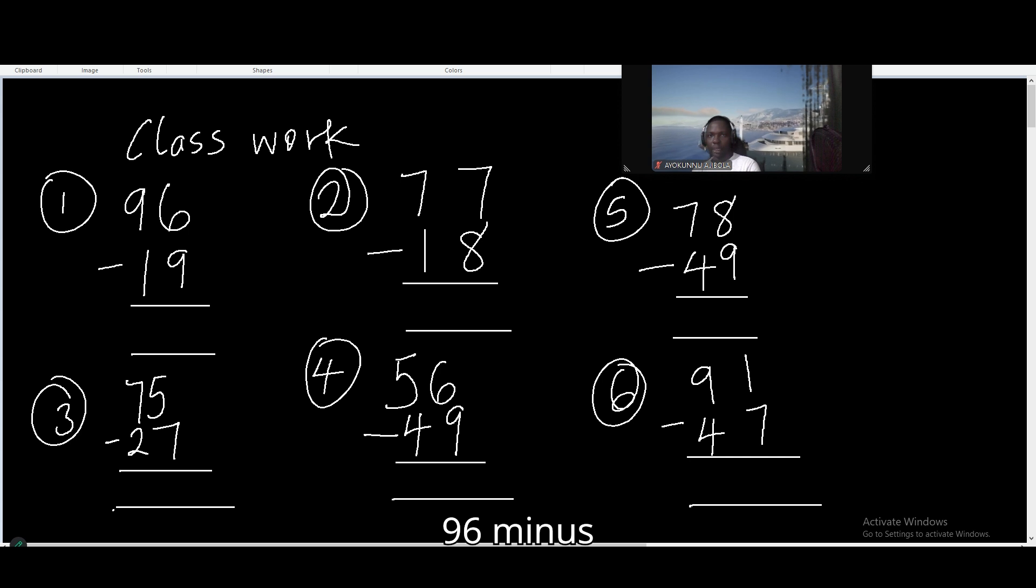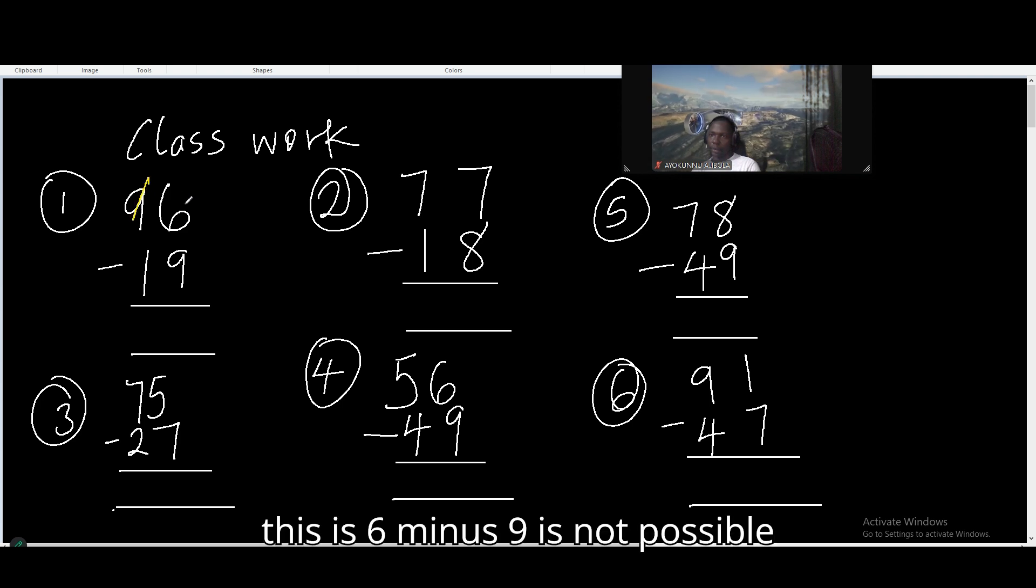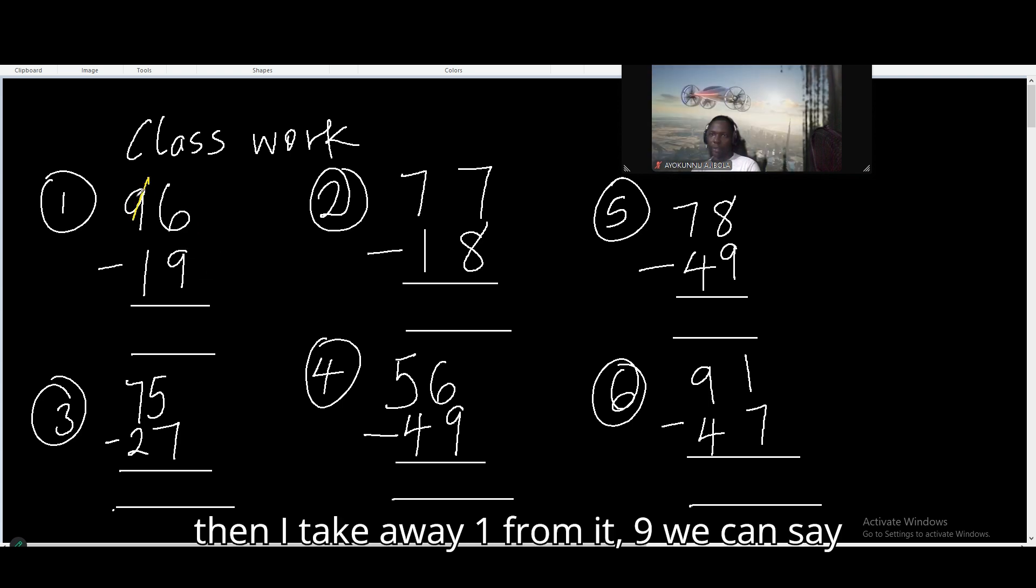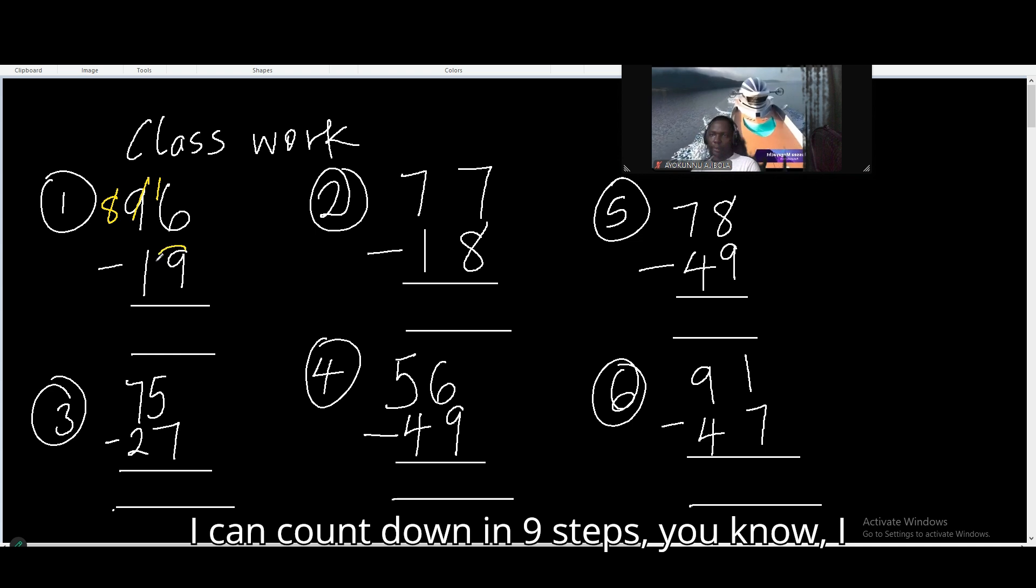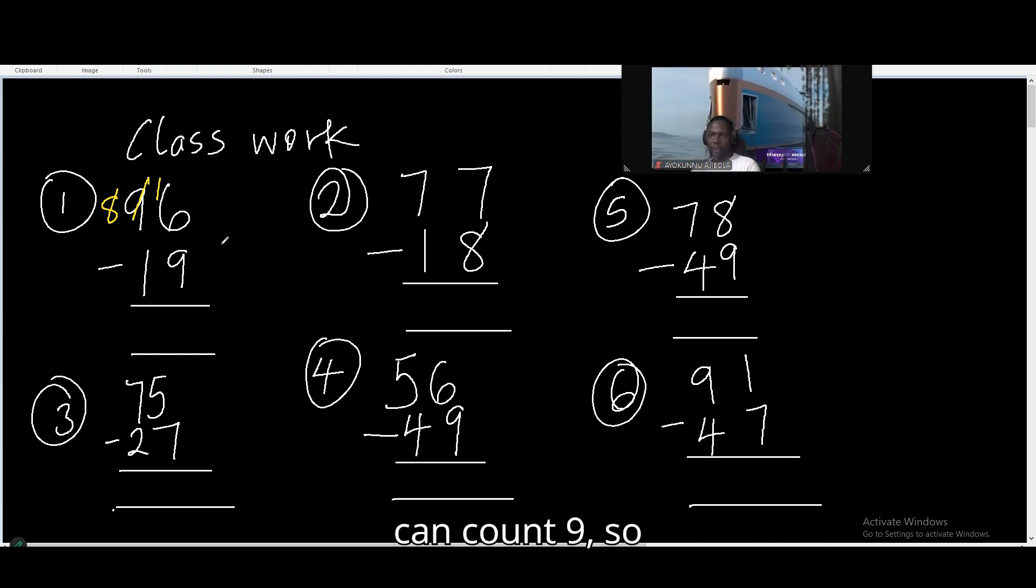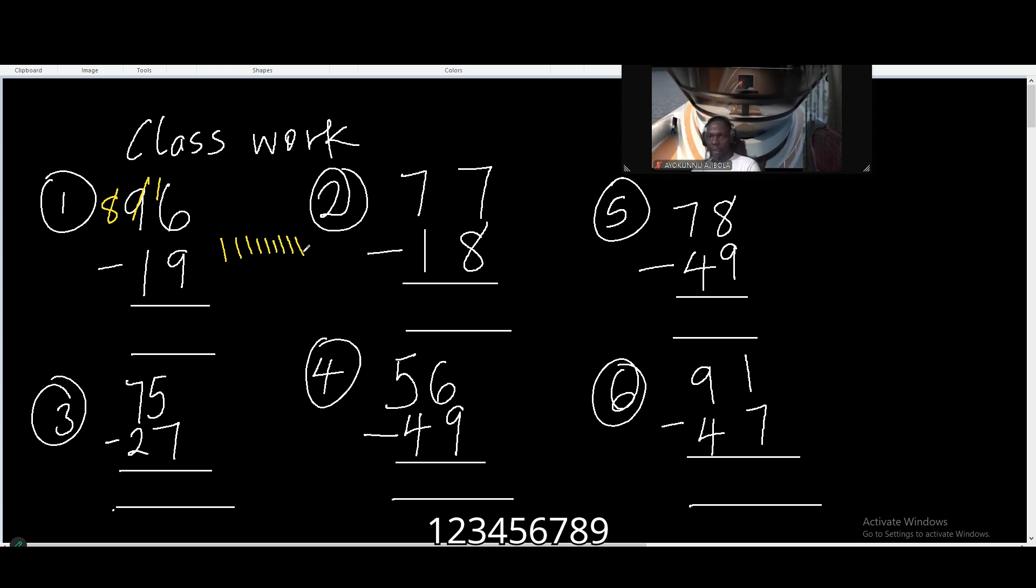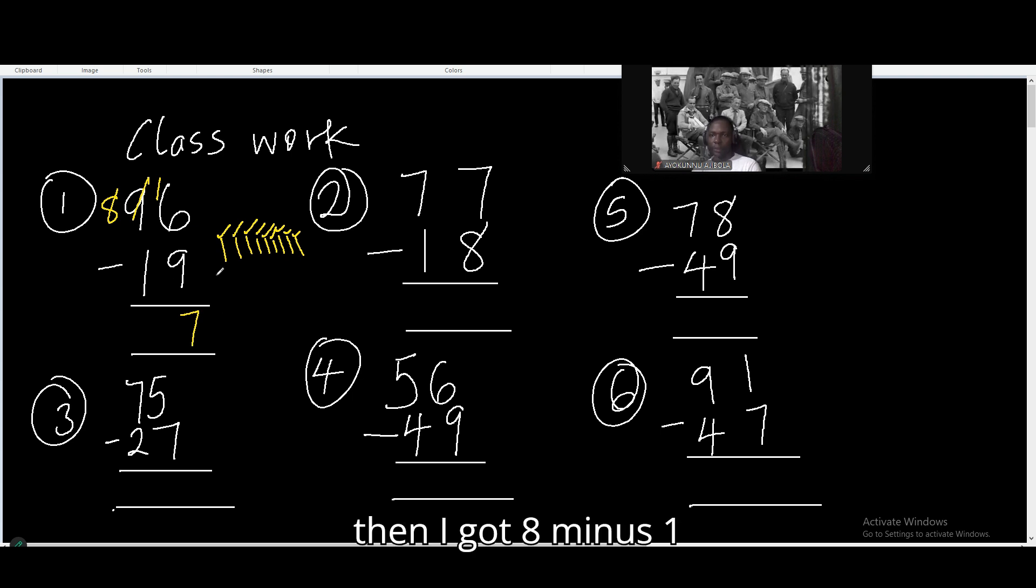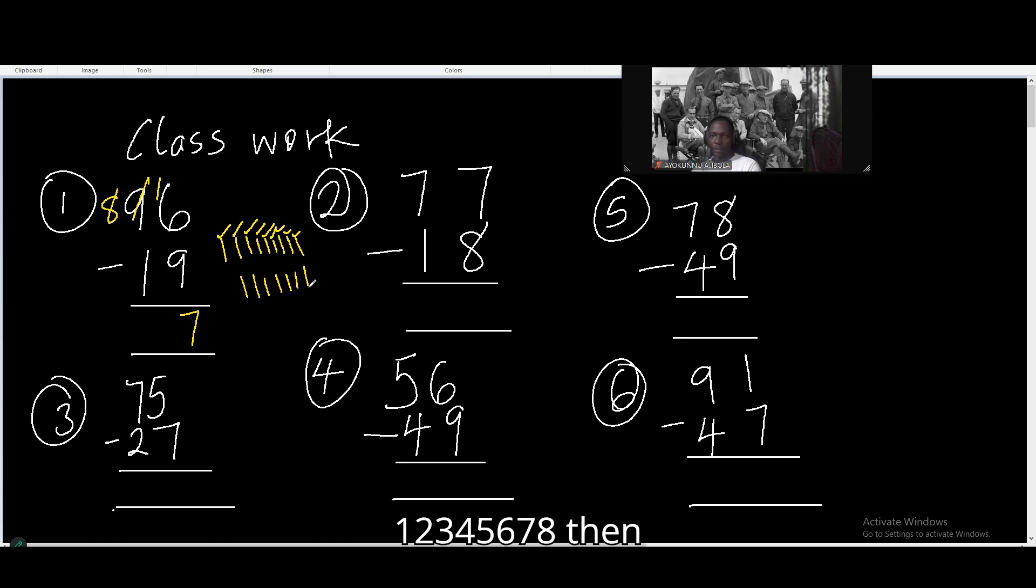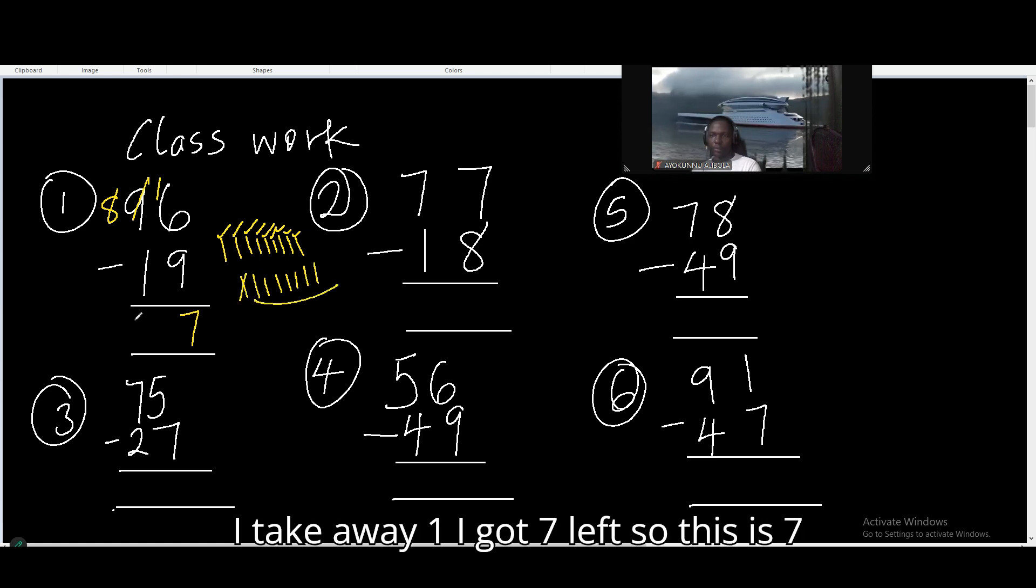Let's quickly look at all of these ones in addition. We have 96 minus 19. So I go, this is 6 minus 9. It's not possible. Then I take away 1 from 9. 9 becomes 8 and I have 16. I can count down in 9 steps. Then from 16, I have 15, 14, 13, 12, 11, 10, 9, 8, and 7. So this is 7. Then I go 8 minus 1. I take away 1, I've got 7 left. So this is 77.